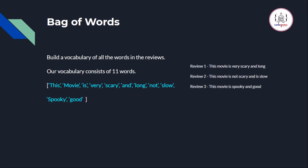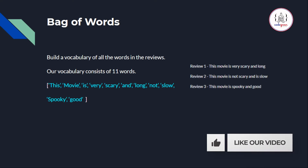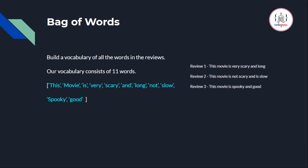We have three reviews: 'This movie is very scary and long', 'This movie is not scary and is slow', and 'This movie is spooky and good'. We build a vocabulary of all the unique words in our corpus. Here we have 11 unique words: this, movie, is, very, scary, and, long, not, slow, spooky, good. This is our vocabulary.